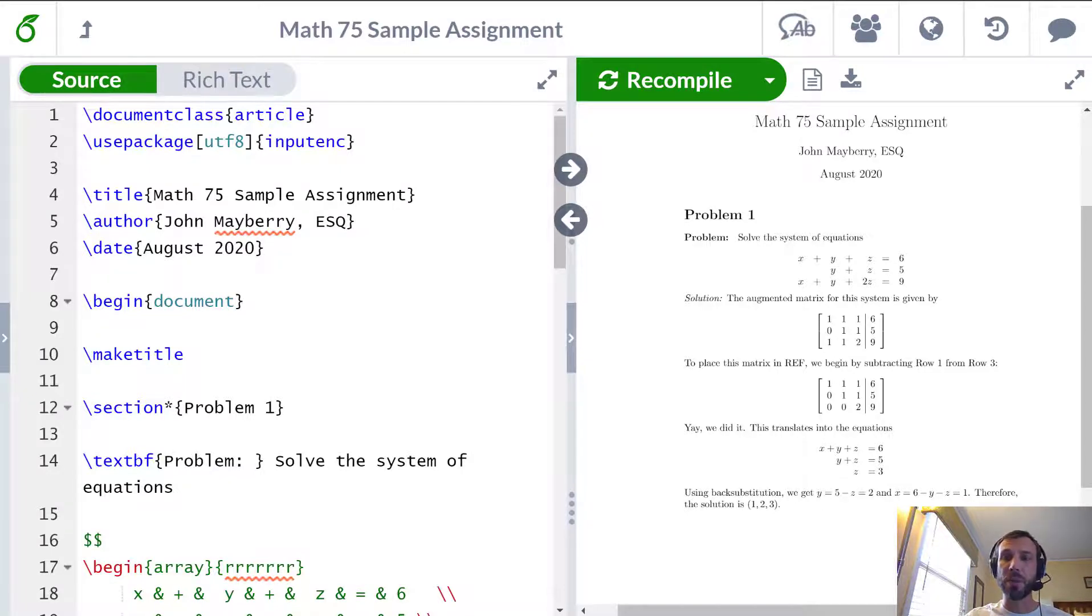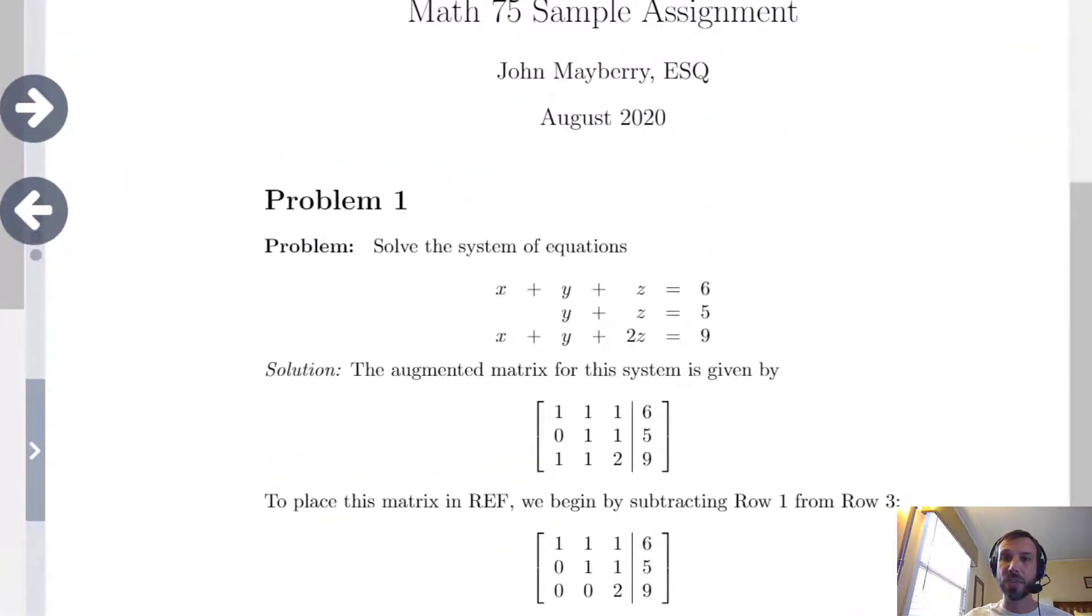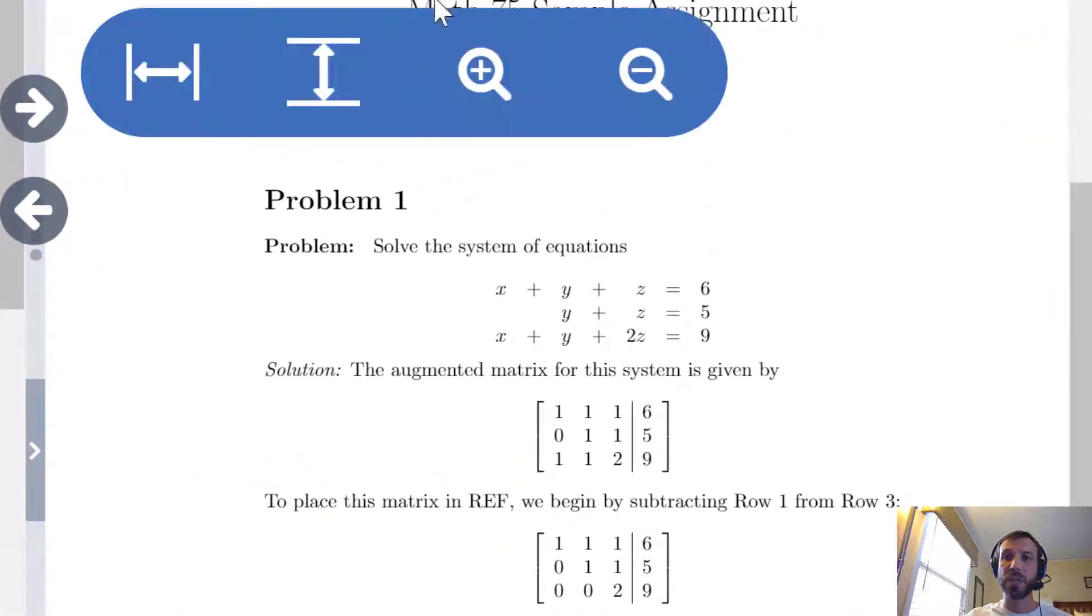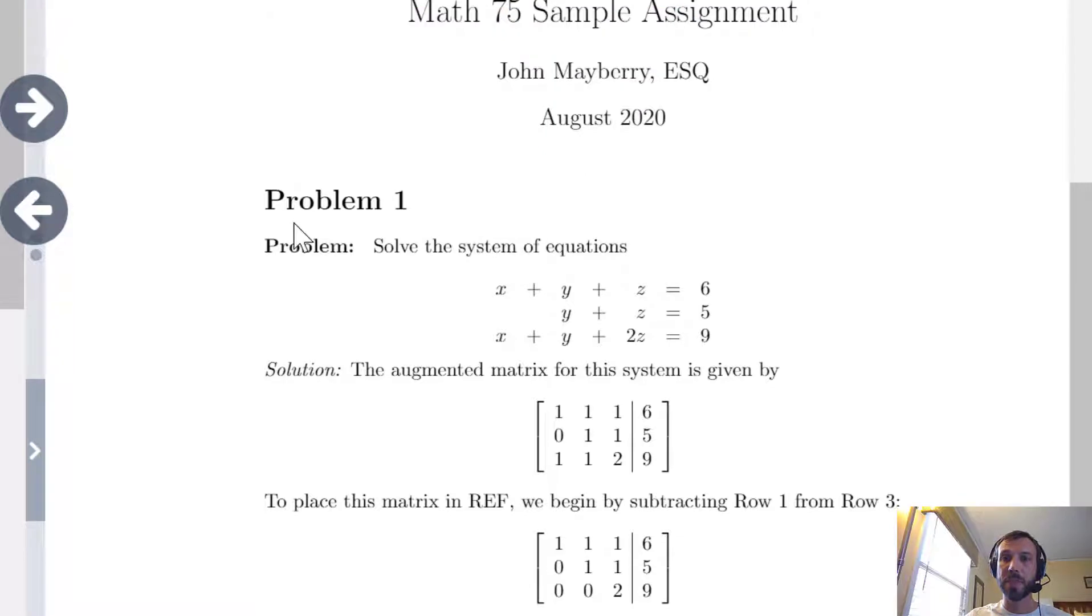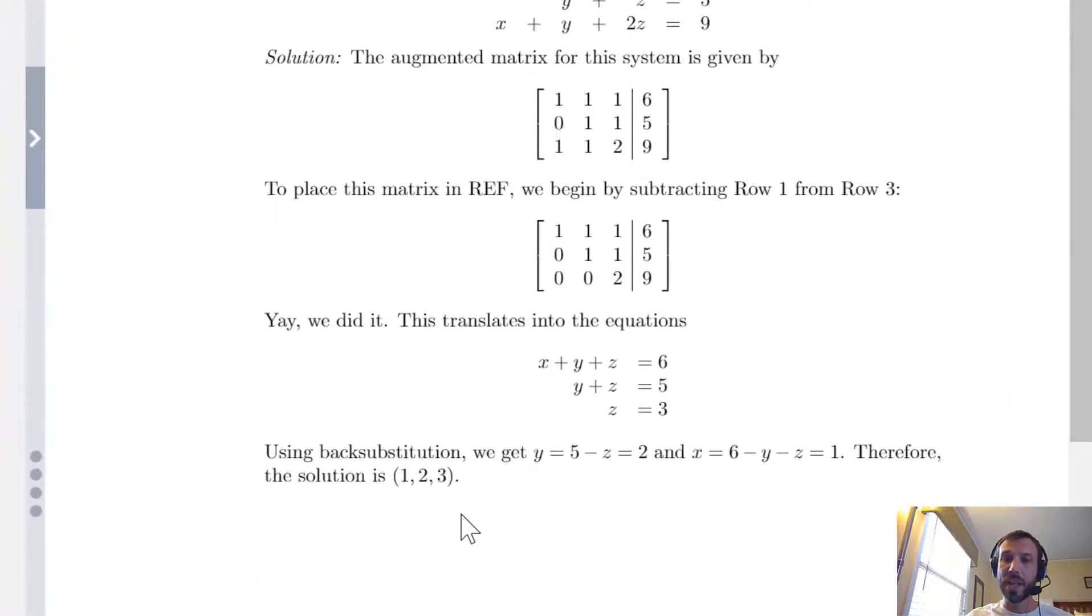Here we'll be going through a typical problem in linear algebra where we're asked to solve a system of equations in three unknowns x, y, and z. You can see a sample solution is written up on the right here. We start off by stating the problem with nicely aligned equations. We write a solution which involves augmented matrices and at the end we state that our solution vector ends up being one comma two comma three.